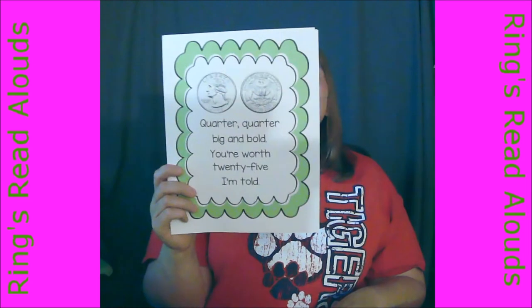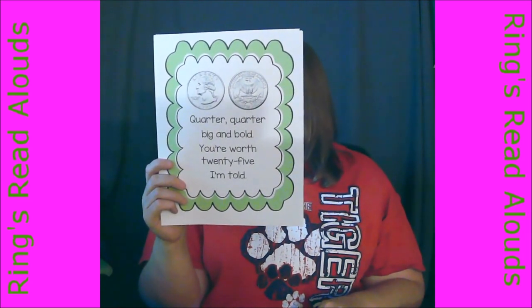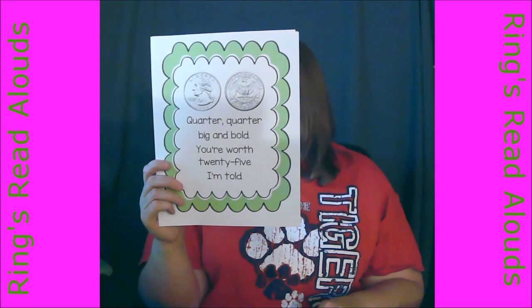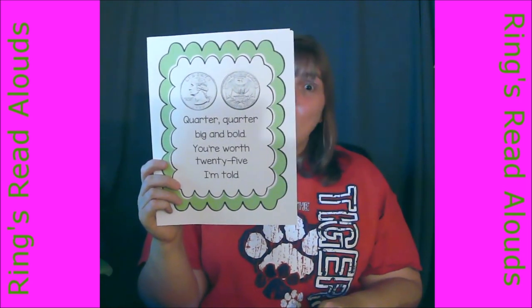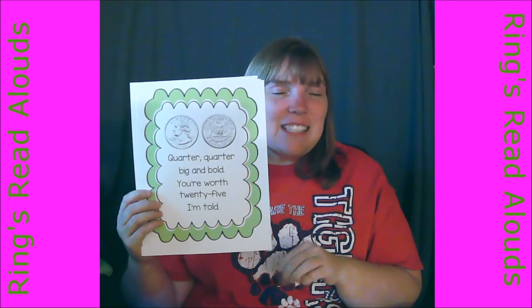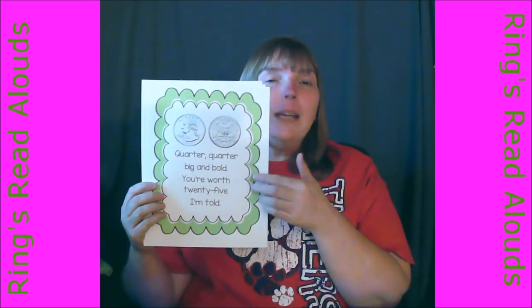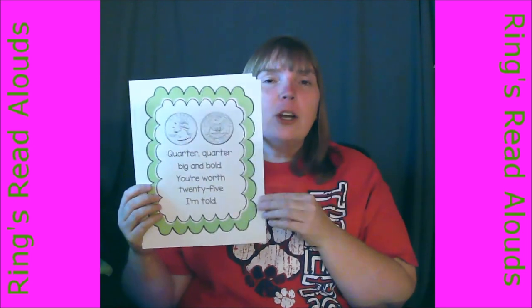Next — quarter. Remember, quarter is the biggest. Quarter, quarter, big and bold, you're worth 25 I'm told. We talked about that at our school — three quarters is how much? 75 cents. That's right, and you can buy ice cream. Let's count it out: 25, 50, 75, a dollar. Because you're using money, it's a dollar — not a hundred. So: 25, 50, 75, a dollar, or 25, 50, 75, 100.